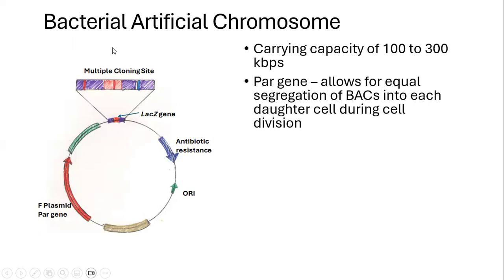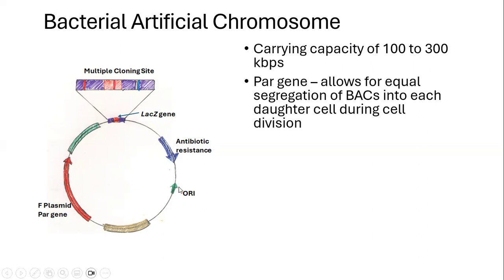The second type is the bacterial artificial chromosome, which has less carrying capacity compared to a yeast artificial chromosome. The yeast artificial chromosome can take an insert of about two megabase pairs in size, while the bacterial artificial chromosome can take an insert size of about 100 to 300 kilobase pairs. It has many genes present in normal vectors, such as an origin of replication required for propagation and an antibiotic resistance gene used as a selection marker.